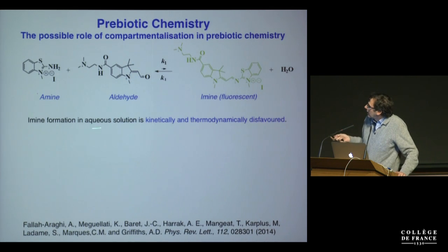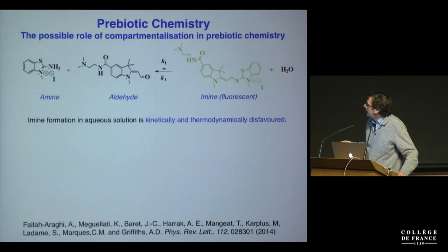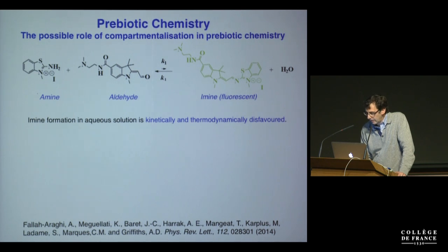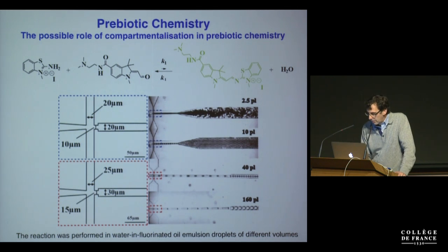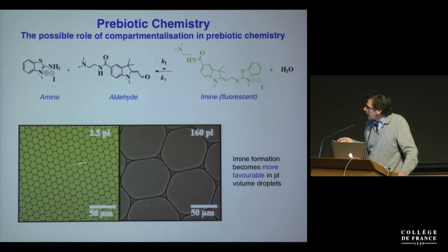We set out to investigate this using a very simple reaction: the reaction of a non-fluorescent amine with a non-fluorescent aldehyde to form a fluorescent imine. Imine formation in aqueous solution is kinetically and thermodynamically highly disfavored. We set out to see what happens if you perform this reaction in droplets in a water-and-oil emulsion, making droplets of different sizes. What we found was that imine formation becomes more favorable in picoliter-volume droplets, and the smaller the droplets are, the more favorable it is.